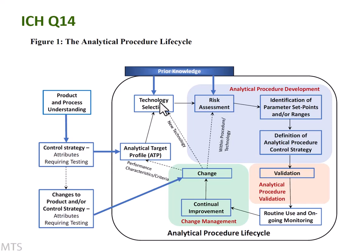Once you've chosen your technology, you go into the procedure development stage. The first thing you do is use all prior knowledge and perform a risk assessment to decide what parameters are important. This is really about your understanding of how the technique works — for example, in chromatography it might be the mobile phase. You might not consciously call it a risk assessment, but that's basically what you're doing at that stage. You then identify set points and ranges for the various parameters in your method.